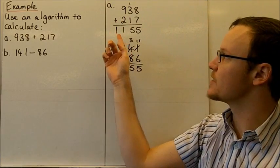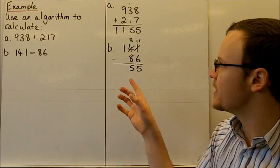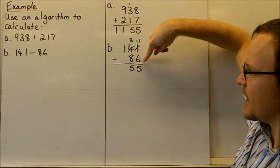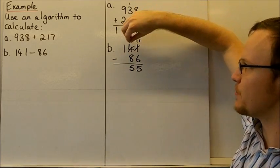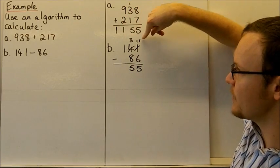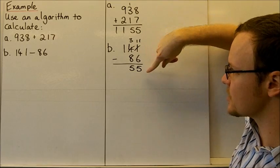For our subtraction algorithm here, if we have 141 minus 86, we can't take 6 away from 1, so we borrow, take 1 from the tens column and make it 11 rather than the 1, and have 11 minus 6, which is 5.